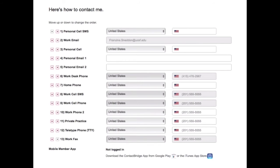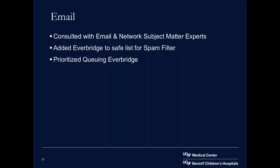An important note: make sure your member portal does not allow users to update information that is coming in from your data feed. Since UCSF pulls work contact data from our HR system, we want users to update their records directly at the source using our self-service directory. If they updated information on the member portal only to have it overwritten the next day by the data feed, they would not like us very much. Also be sure to meet with internal subject matter experts to ensure Everbridge notifications won't bring down your email system. Everbridge was added to our safe senders list and designated with high importance in our email priority queue.